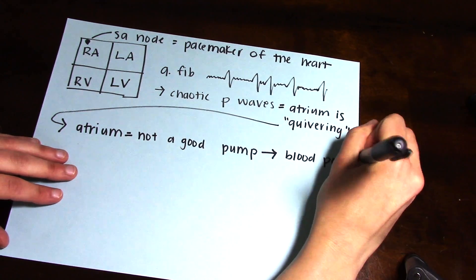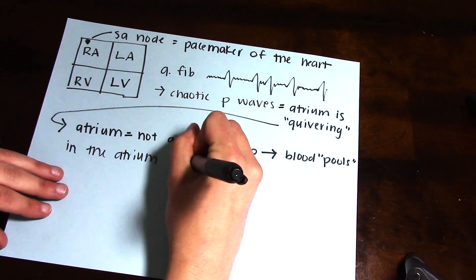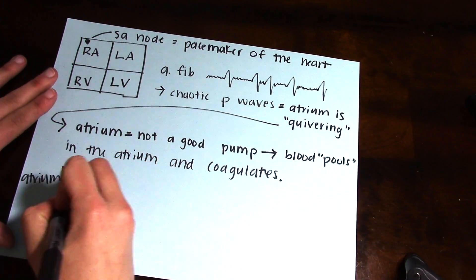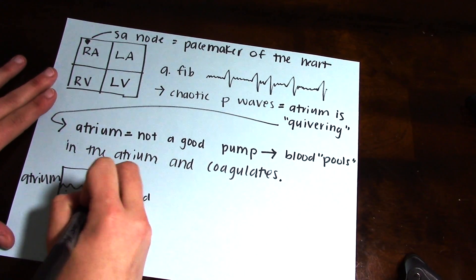Because the atrium is not being a good pump and pumping the blood out into the ventricles, blood tends to pool up in the atrium, and when it sits there it starts to coagulate and form clots.